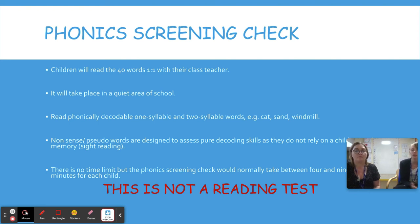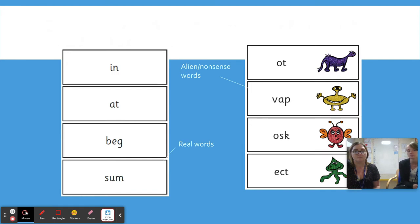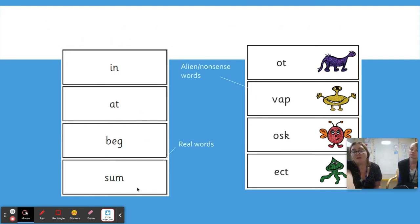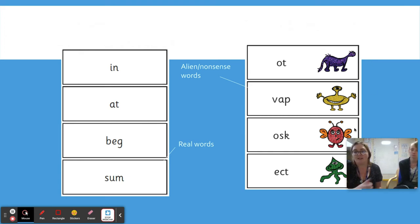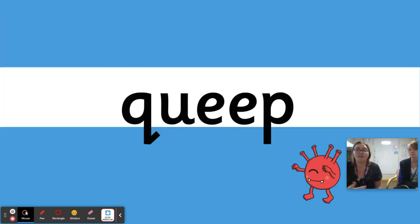The nonsense words are purely to check decoding skills. Here are some examples: real words include 'in', 'at', 'beg', and 'some', and then there are alien or nonsense words. There are always pictures of aliens so children can easily recognise that these are alien words. For example, the children would read 'keep'.